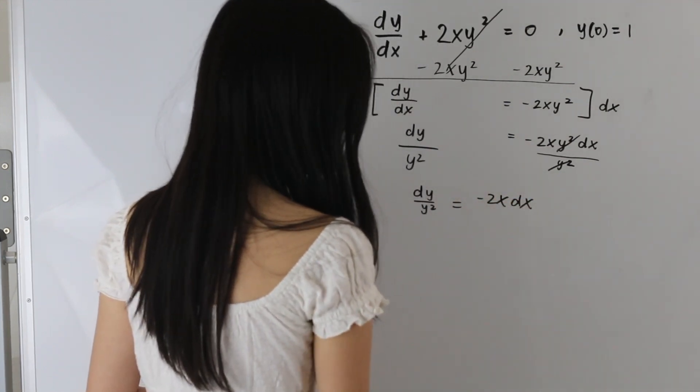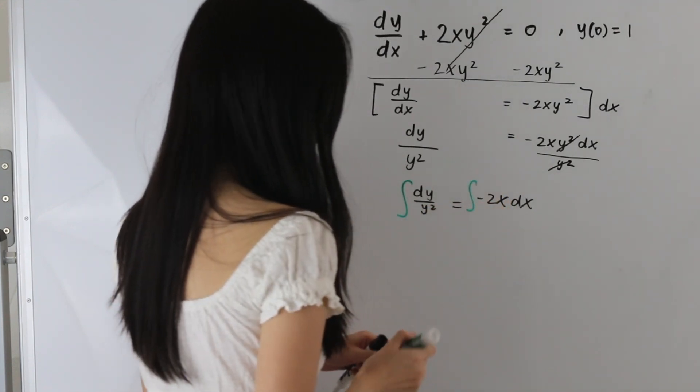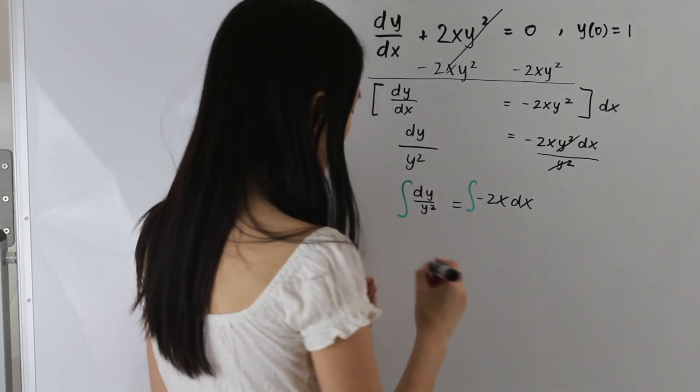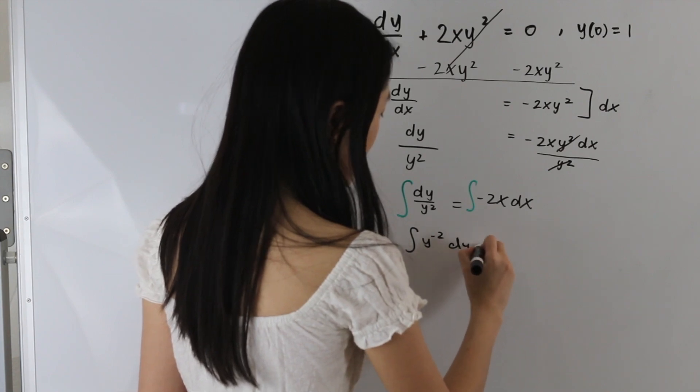And from here, we are going to want to integrate both sides. Let's go ahead and rewrite this integral as y to the negative 2 dy, just to make our lives easier.